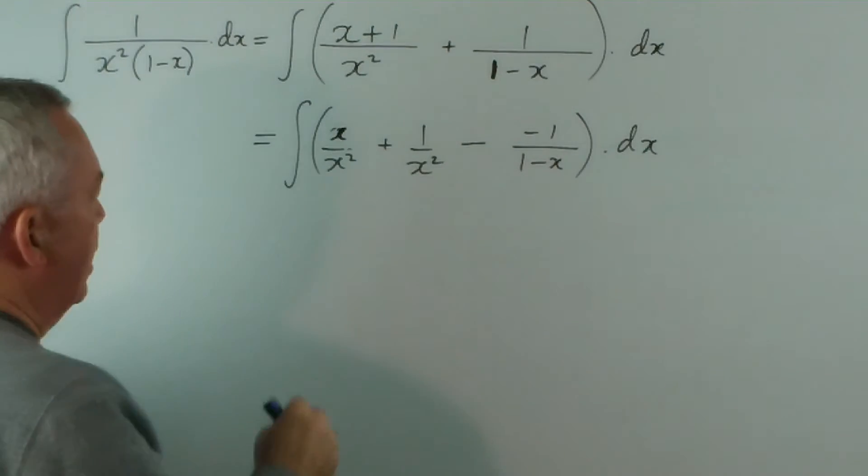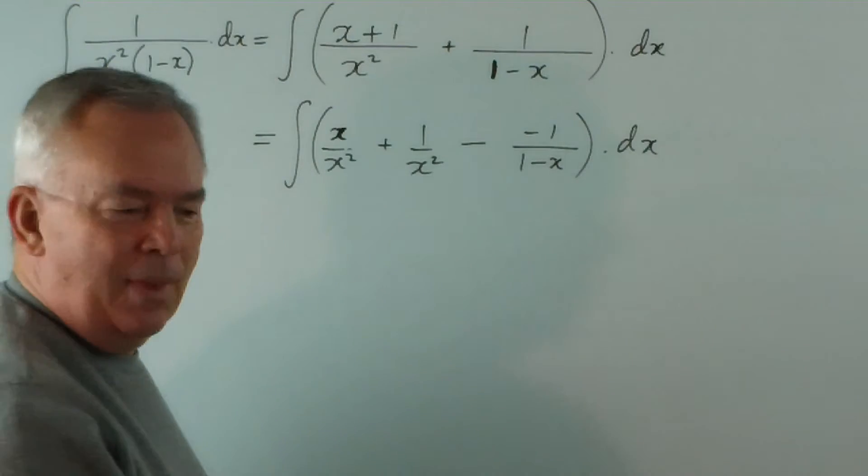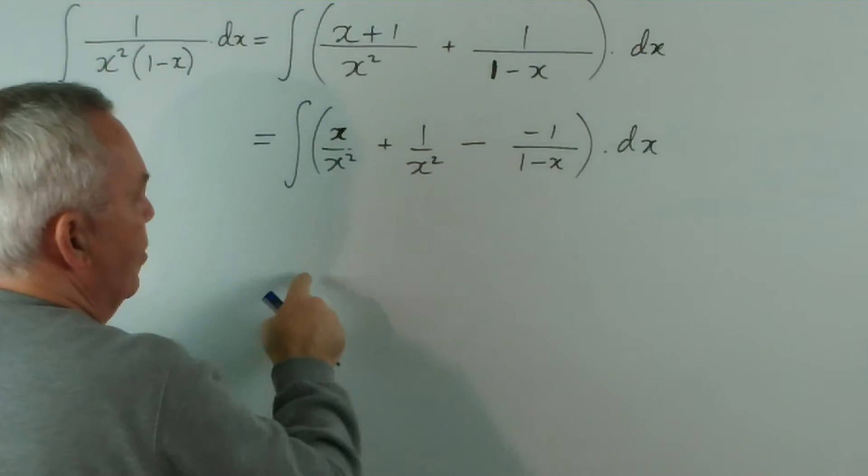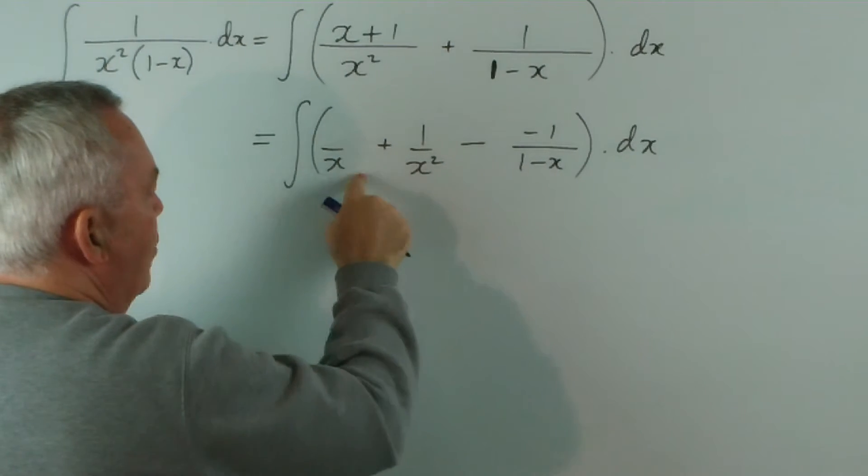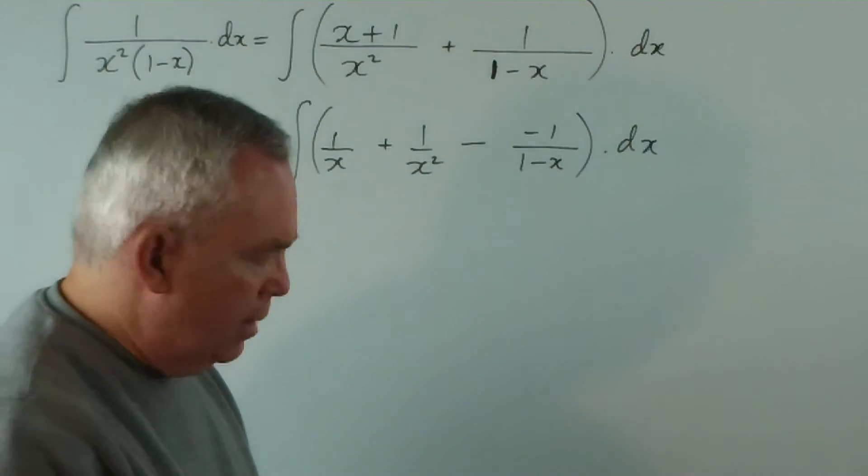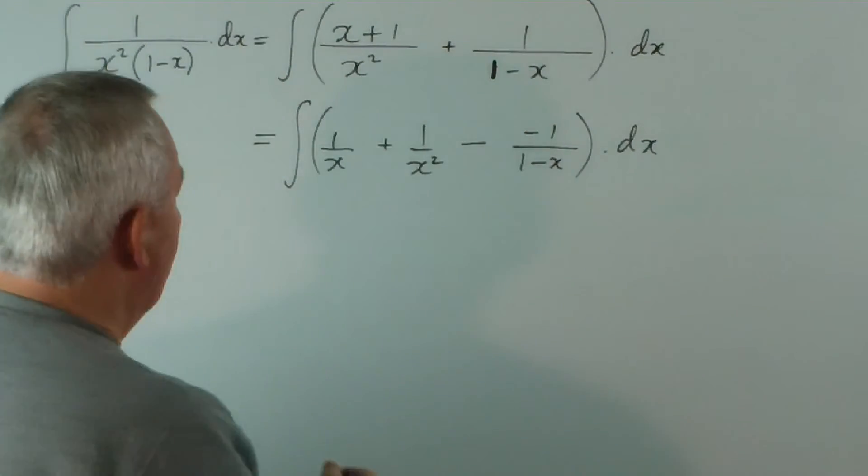And the reason I hesitated earlier is whether to convert this in my head at the same time. But I think you can see that x over x squared is really 1 over x. So, that's just saved me a line of writing, and I'd have limited room on my board here.